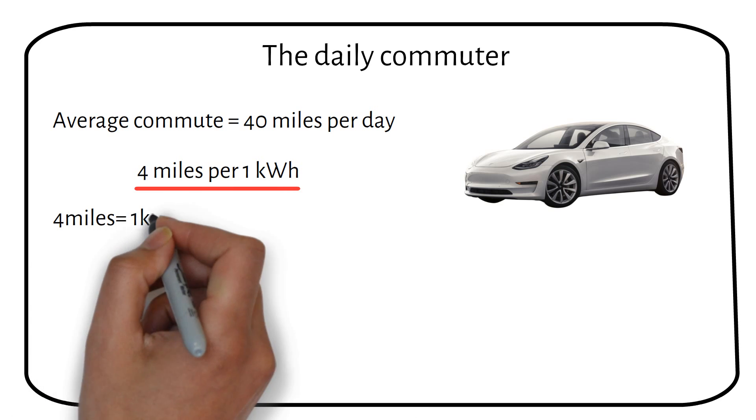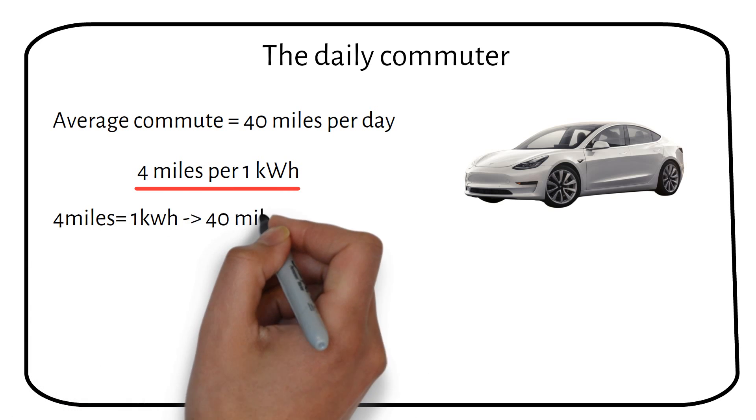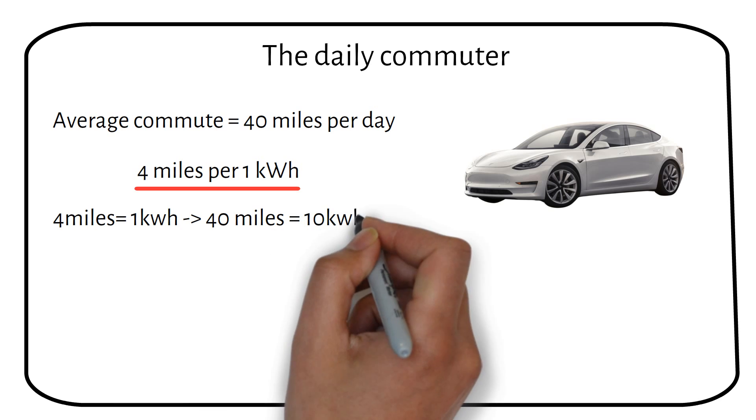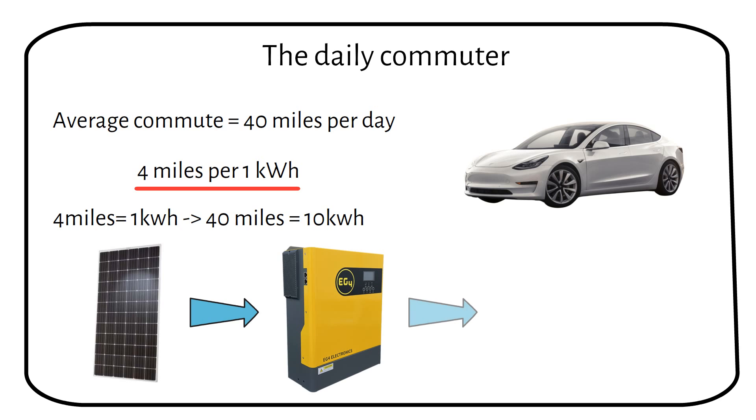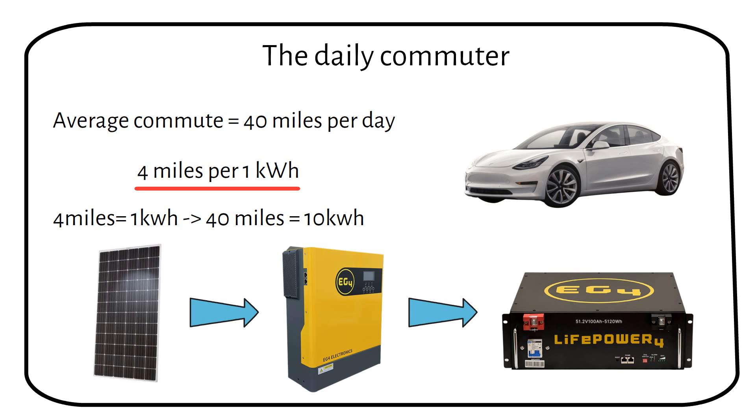translating to a daily consumption of 10 kilowatt hours to cover the 40-mile commute. I will share the diagram in the next slide. Given that most cars are away at work during the day when the most solar power is generated, we will design a system to store solar energy in batteries, ready to charge your car when you return home.